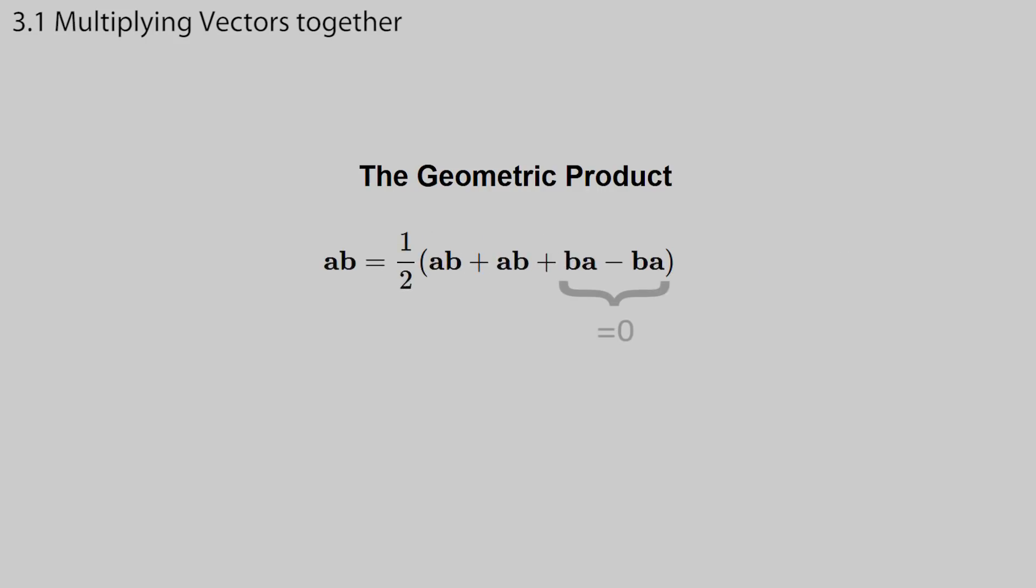To define the product, first note that it is possible to split a product, or any function that takes two arguments, into the sum of a part that does not change if we swap the arguments, and one that does change. The first term does not depend on the order of the arguments, A and B, anymore. It is called the symmetric part. While the second term changes sign when the arguments are swapped. It is called the anti-symmetric part. The dot product of two vectors is symmetric, and a measure of distance, so it sounds useful geometrically to set it equal to the symmetric part. Similarly, the outer product of two vectors is anti-symmetric, so it sounds useful geometrically to set it equal to the anti-symmetric part.